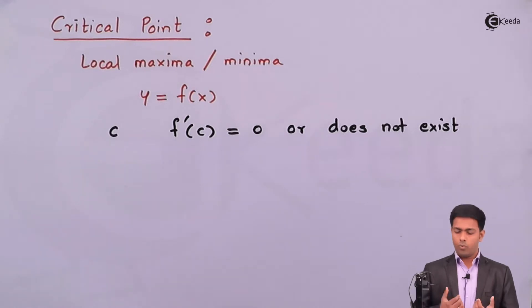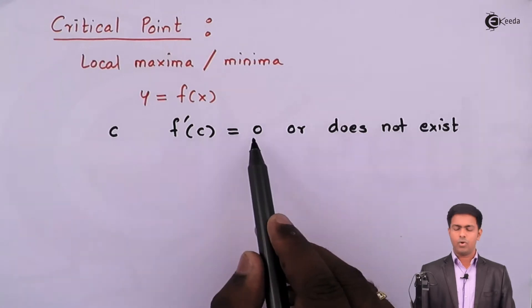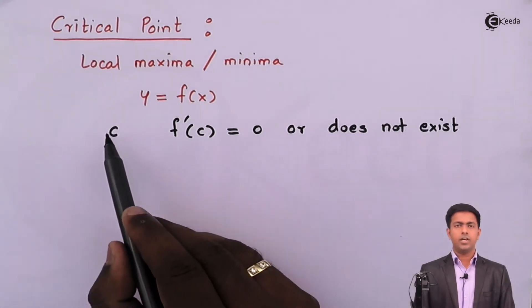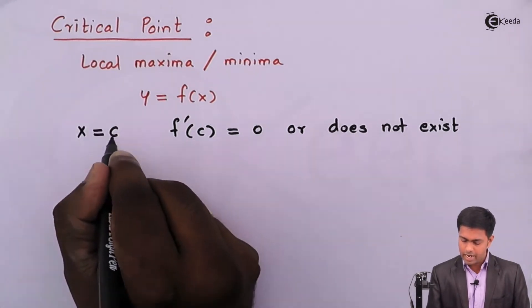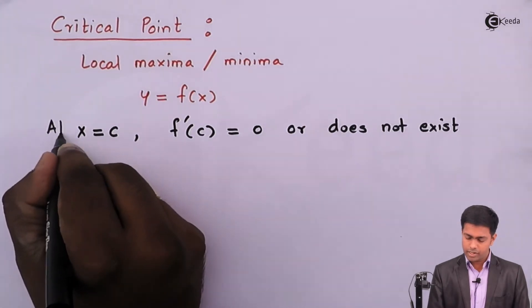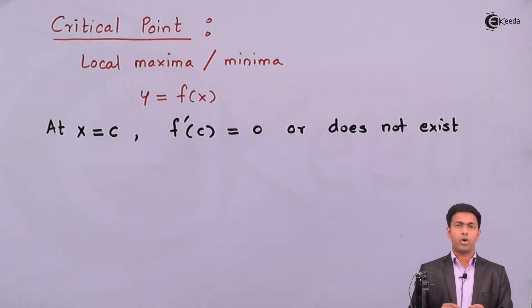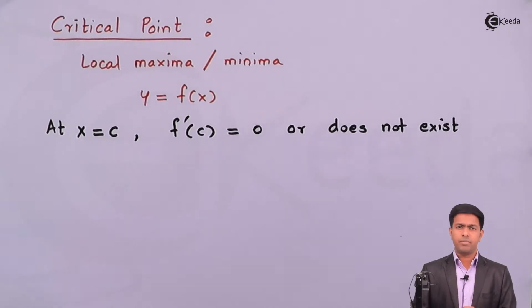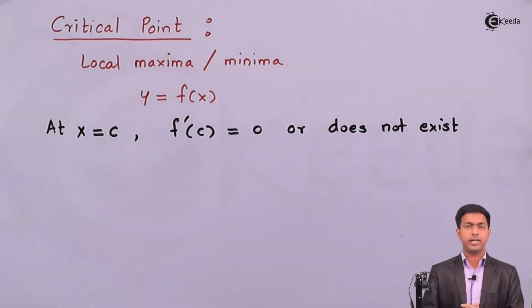We check whether for the given curve the value of f'(c) is zero or does not exist. That point c will be called the critical point, so at x equal to c we should have f'(c) as zero or does not exist. Basically at critical points, local maxima and minima occur.